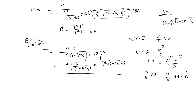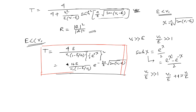So we observe that even when the energy of the particle is very much less than the potential height, there is still a finite value of T — a finite transmission probability which is non-zero. Even if E << V₀, T ≠ 0. This is quantum mechanical tunneling, because no classical particle can do this.